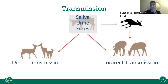The prion is found in all tissues and blood. When an animal dies — either shot or naturally — any blood or tissue left in the woods will stay in the soil for years and years, and can be easily transmitted through the soil.